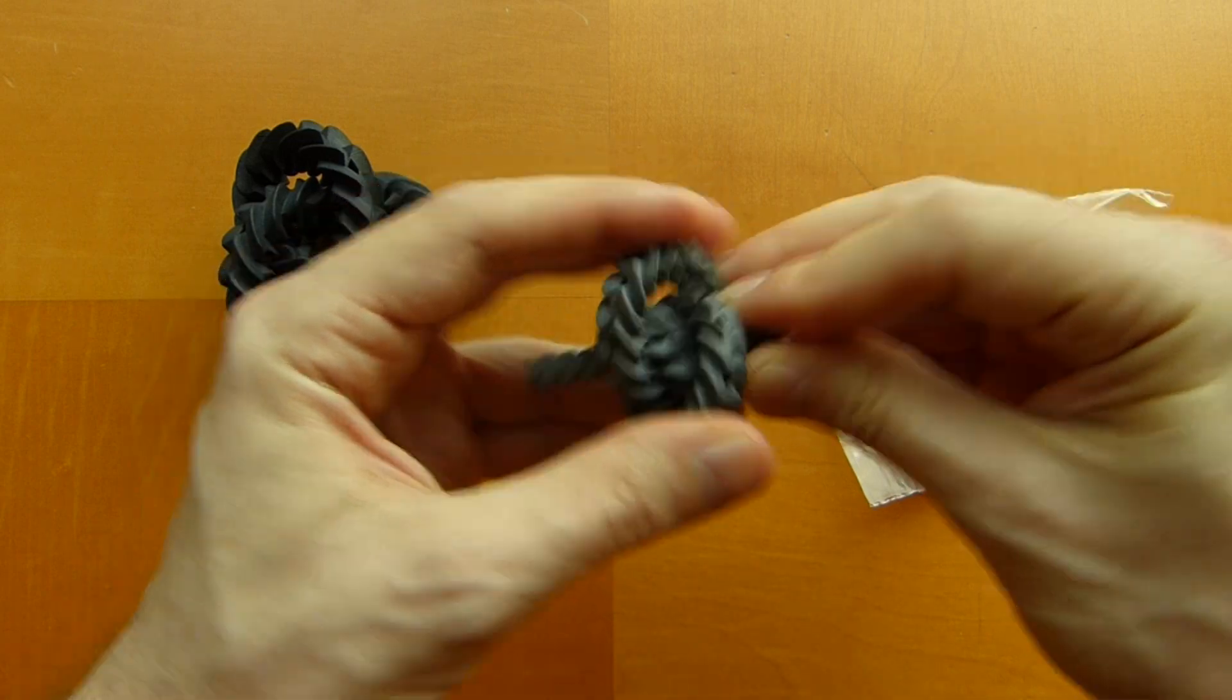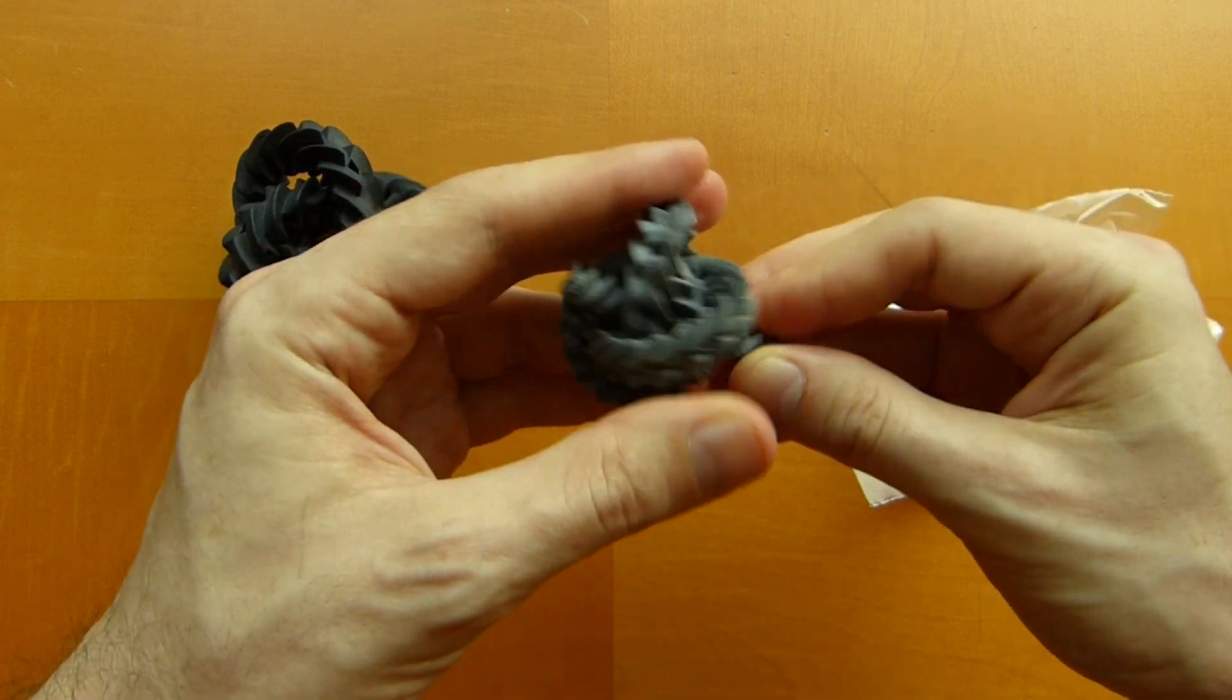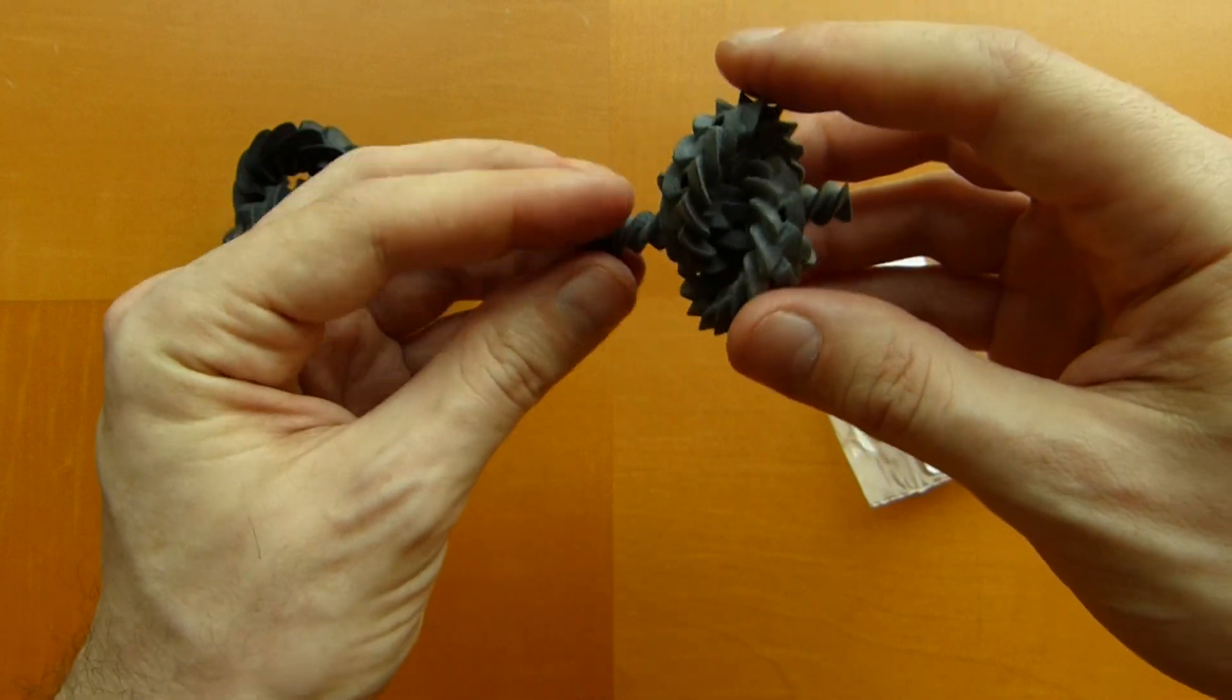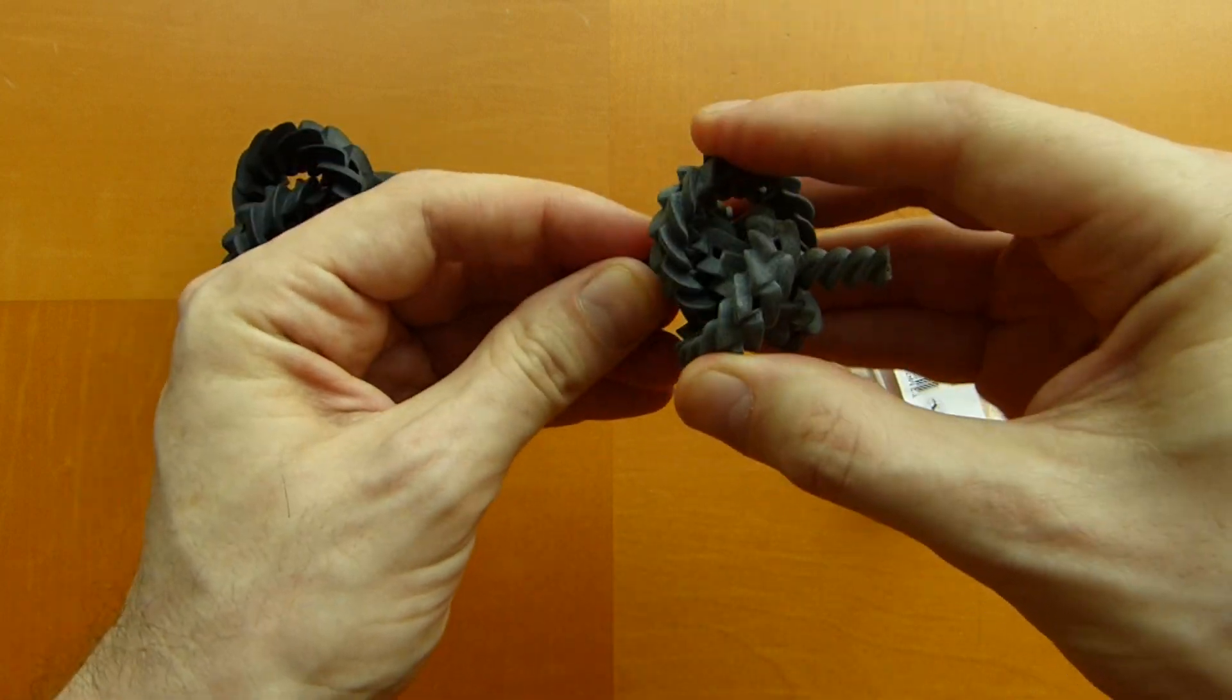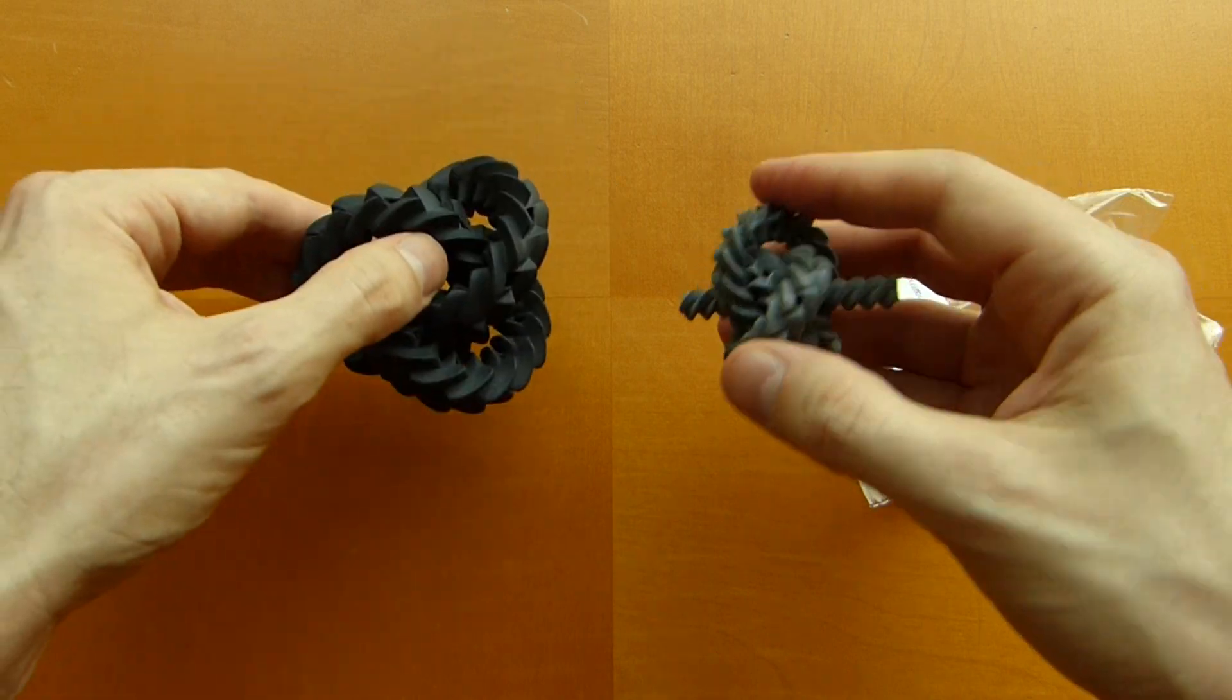Actually, the smaller ones seem to have that problem in general, that there isn't enough weight on the three gears to have them roll down the axle on their own weight. That does work very nicely with the big one. But this seems like a success.